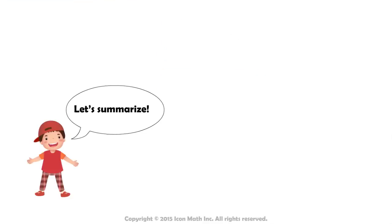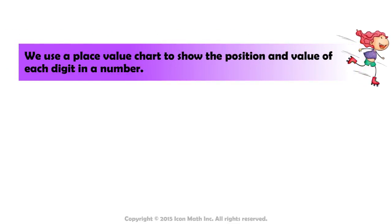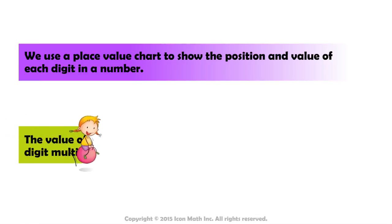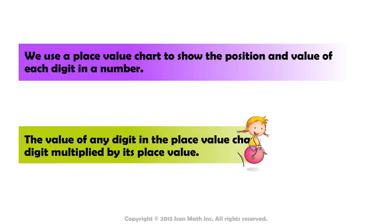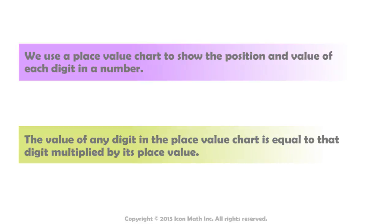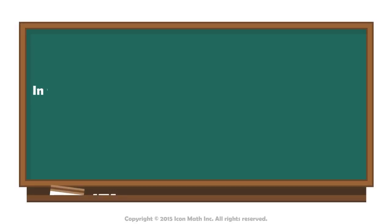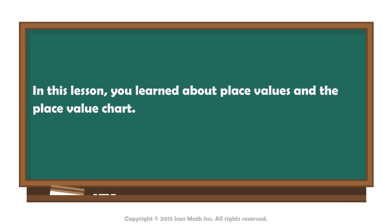Let's summarize. We use a place value chart to show the position and value of each digit in a number. The value of any digit in the place value chart is equal to that digit multiplied by its place value. In this lesson, you learned about place values and the place value chart.